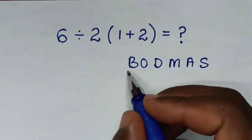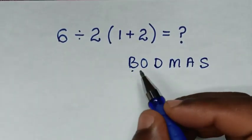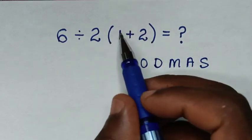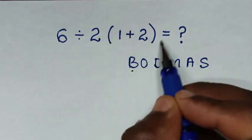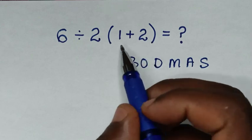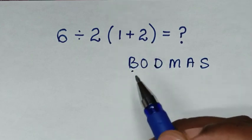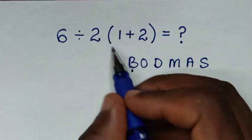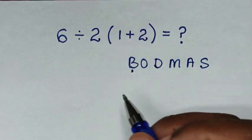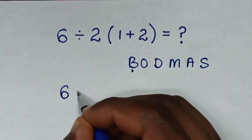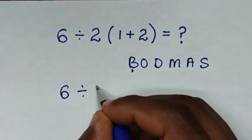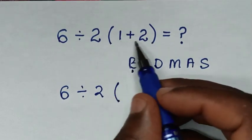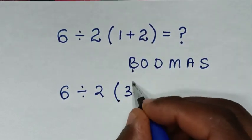Whereas B is bracket, and here we have this bracket. The operation inside this bracket is addition of 1 plus 2. So we'll start with this bracket first. It will be 6 divided by 2, then bracket, from 1 plus 2, which is 3, bracket.